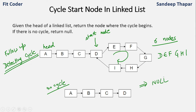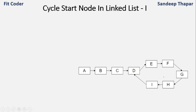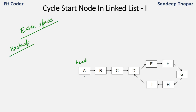There are various methods to solve this. In this video we will focus on two methods to find the start node of the cycle. The first method is very intuitive — it makes use of extra space. We will create a hash map and traverse the linked list starting from head, storing all node addresses in the hash map.